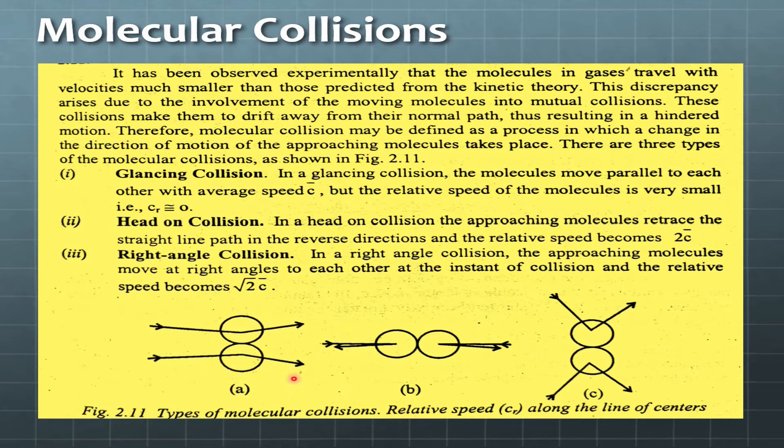The next type is head-on collision. In this, the approaching molecules retrace the straight line path in the reverse directions. There are two molecules, one coming from this side and one from this side. They collide at this point, and the impact is so strong that the molecule which was going in this direction, after collision, will move in the opposite direction.